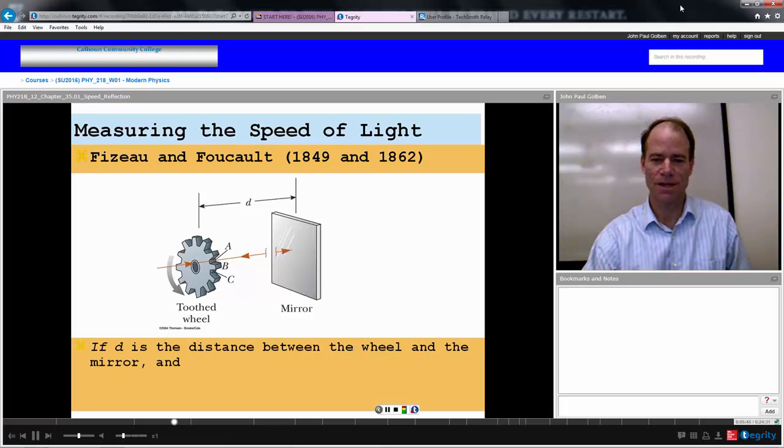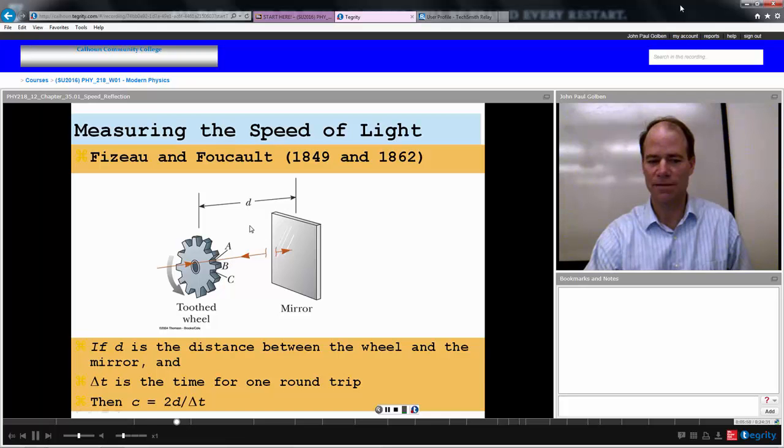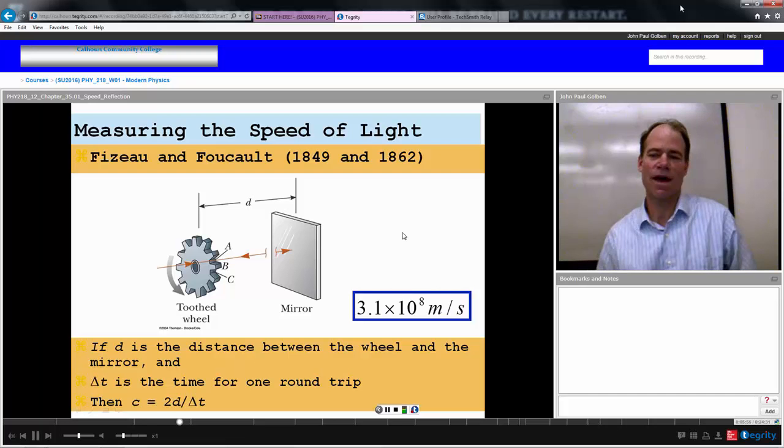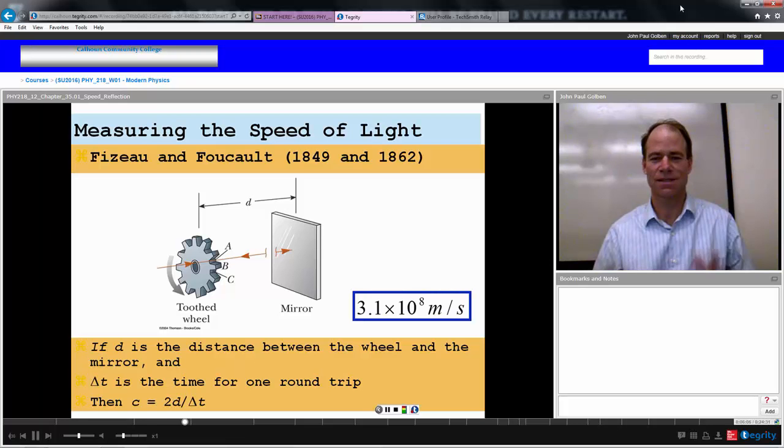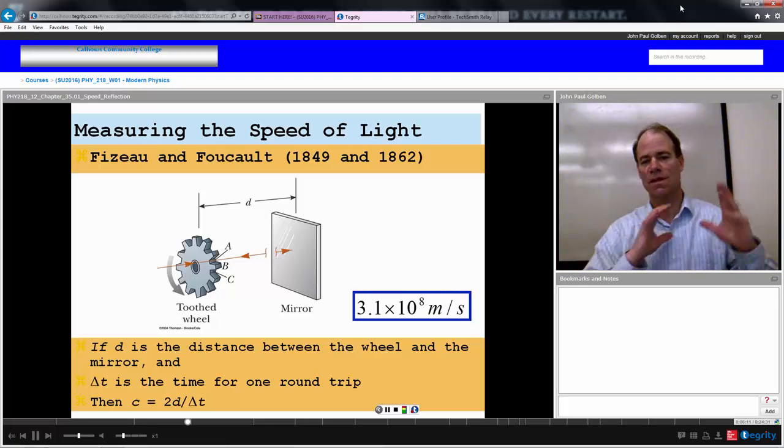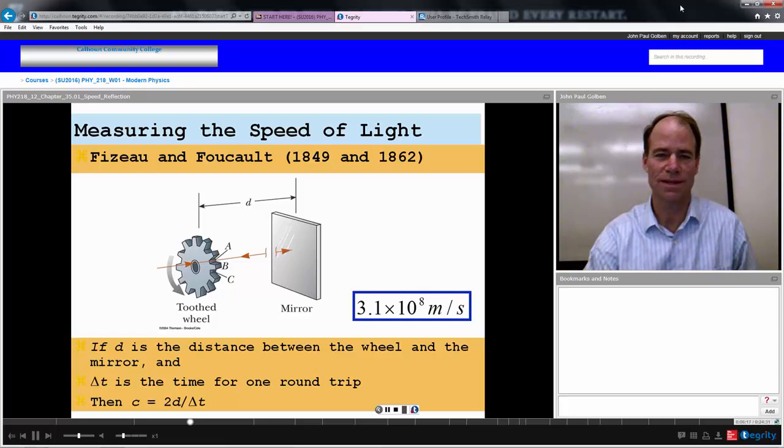And based on this measurement for the round trip time, twice that distance to the mirror, they came up with a value for the speed of light of 3.1 times 10 to the 8 meters per second, very close to the known value today of 3 times 10 to the 8 meters per second. So excellent experimental apparatus. They did this for many times over the years, and modify their apparatus to make it even more accurate. 3.1 times 10 to the 8 meters per second.